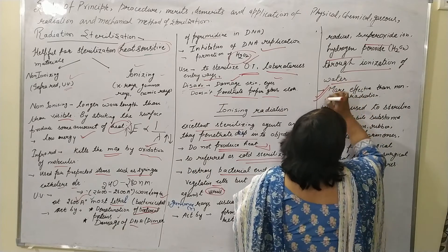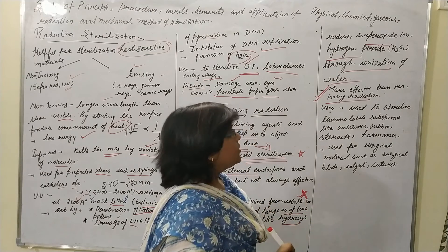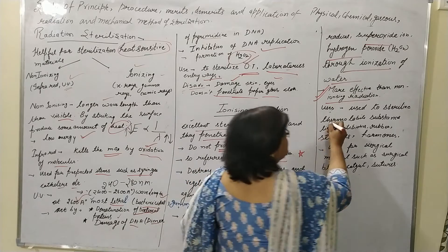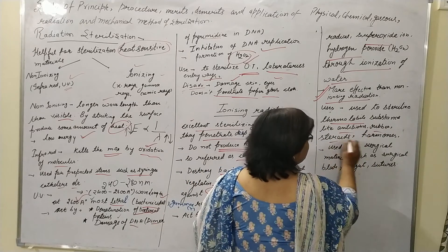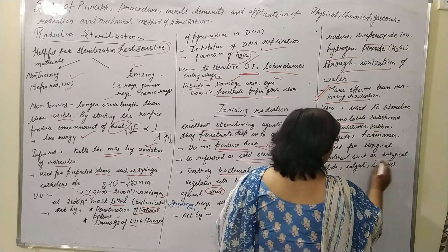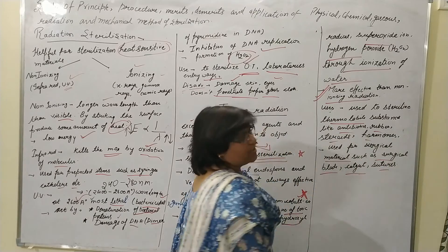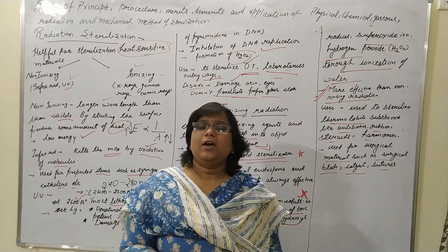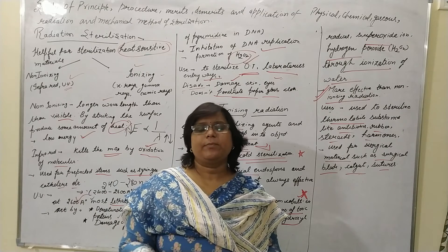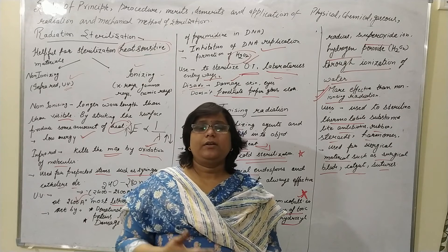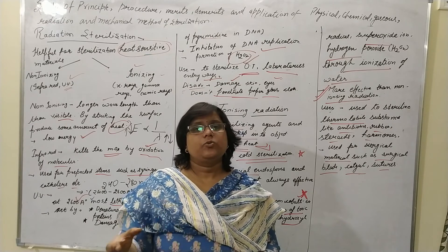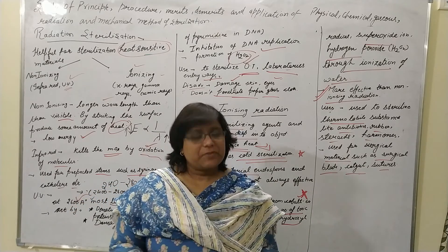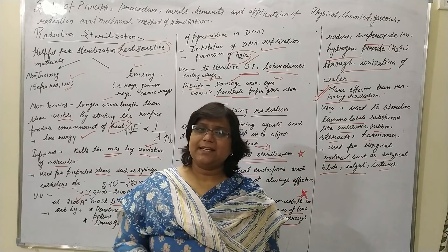Ionizing radiation is more effective than non-ionizing radiation. It is used to sterilize thermolabile substances like antibiotics, rubber, steroids, and armor, as well as surgical instruments like surgical blades, catgut, and sutures. However, not all materials are suitable for radiation sterilization, and not all radiations are able to destroy endospores.